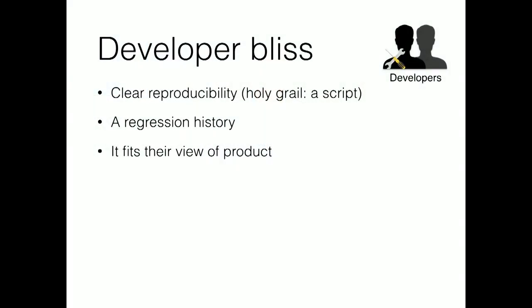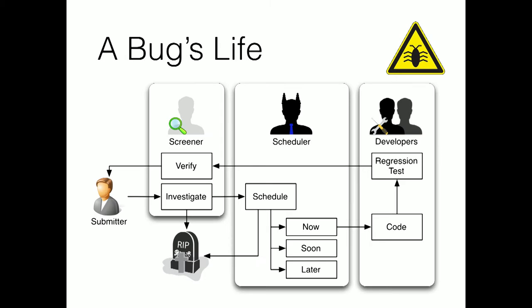If you can figure out what that developer really likes, play to it. What makes the developer happy — beyond the caffeine and snacks — is clear reproducibility on the bug. The holy grail is usually a script: if you can produce a script that demonstrates it, you've made everybody in this entire process really happy. A regression history means the developer has a lot less haystack to sift through to find the bug. And it needs to fit their view of the product — if you're asking them to do something totally different, you'll probably get pushback.